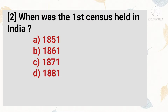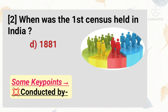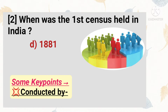When was the first census held in India? The right answer is that the first census was held in India in 1881 on 17 February. Actually, the first census was conducted in India in 1872, but regular census started in 1881. This census was conducted by Census Commissioner of India, William Cecilie Plotin.